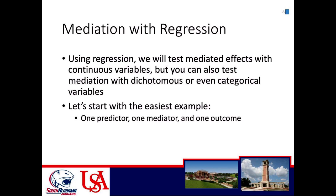So, mediation with regression. Using regression, we can test mediated effects with continuous variables — we can see whether a mediator is a significant mediator, whether there is a significant indirect effect, whether X significantly influences Y through the mediator. We can do that in Excel with the help of a few websites. You can also test mediation with dichotomous or categorical variables, but using continuous variables is typically the easiest place to start.